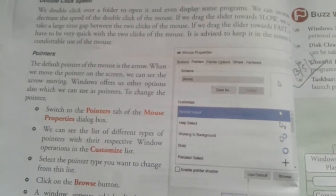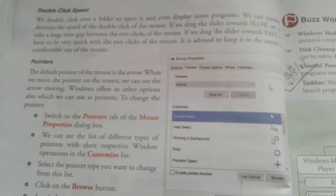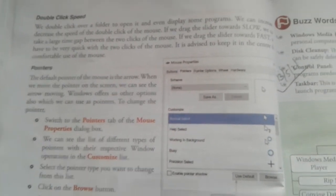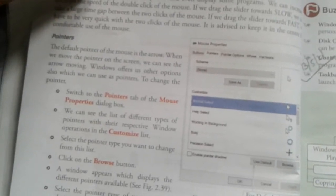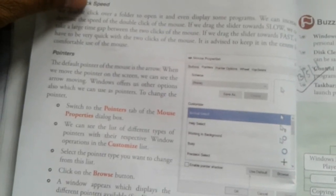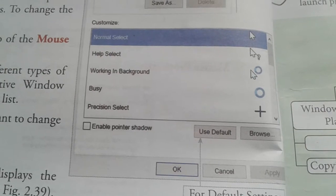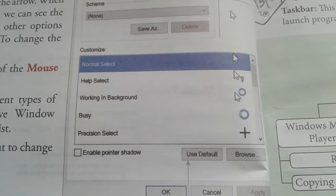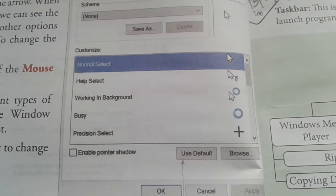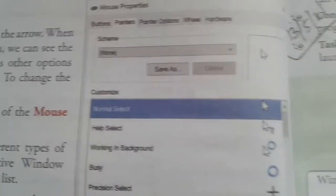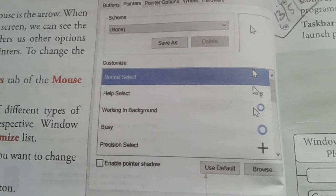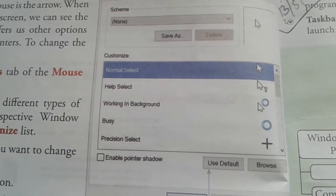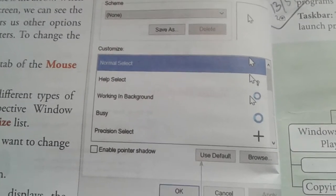The next question: what does the customized list of mouse pointer display? The default pointer of the mouse is the arrow. When we move the pointer on the screen, we can see the arrow moving. Windows offers us to change the pointer. We can see the list of different types of pointers with their respective window operations in the customize list.